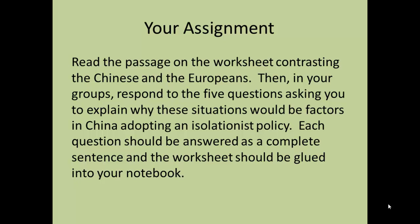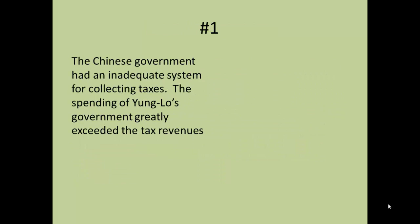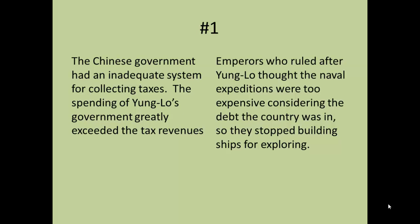Your answers can be written directly on the worksheet or in your notebook if there's not enough room. Here's an example with number one: the Chinese government had an inadequate system for collecting taxes, and the spending of Yongle's government greatly exceeded tax revenues. A possible answer: the emperors who ruled after Yongle thought the naval expeditions were too expensive considering the debt the country was in, so they stopped building ships for exploring. For the remaining pieces of evidence, connect each to why the Chinese would stop exploring.